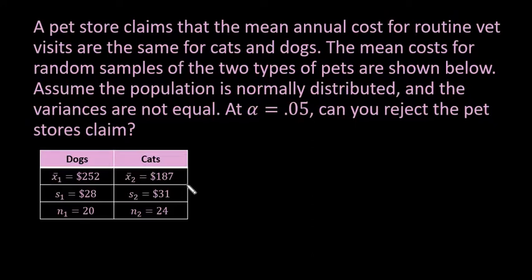A pet store claims that the mean annual cost for routine vet visits are the same for cats and dogs. The mean cost for random samples of the two types of pets are shown below. Assume the population is normally distributed and the variances are not equal. At alpha equals 0.05, can you reject the pet store's claim?